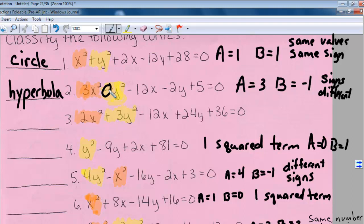Okay, now looking at example three, a is 1 and b is, I'm sorry, a is 2 and b is 3. Those are different values but the same sign. So I have an ellipse. So we have different values, same sign.